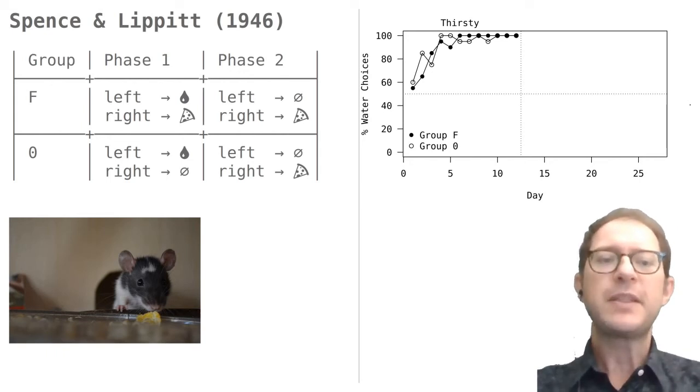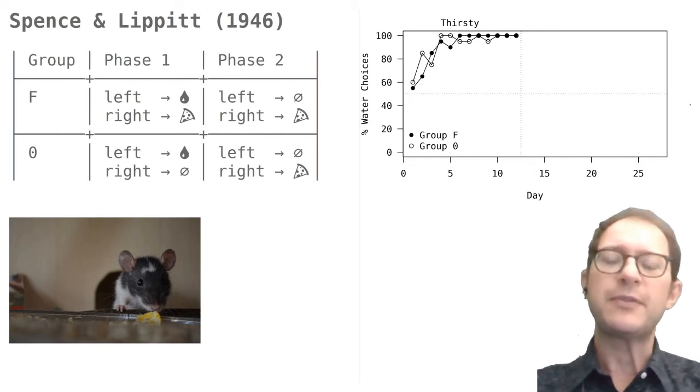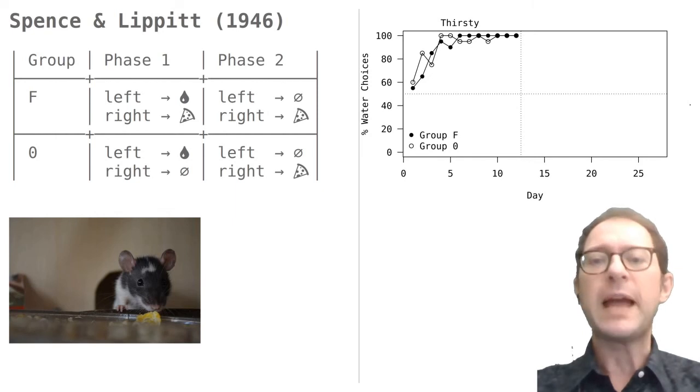The question is whether the rats that had been trained with food in the right arm of the maze would switch from going left where they could find water that at this point they did not want, to going right where they could expect to find food that they now want.